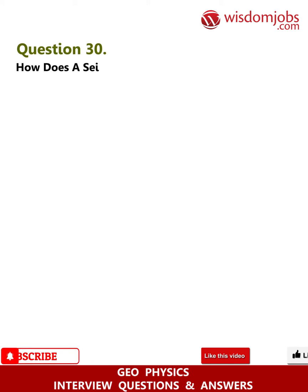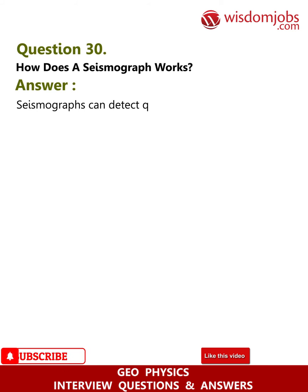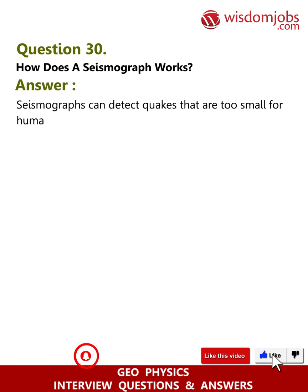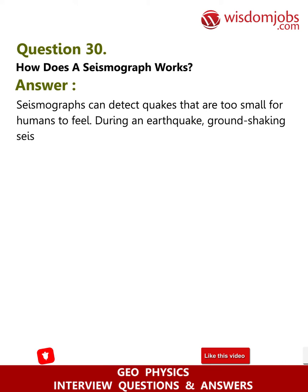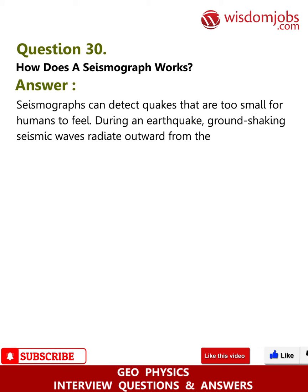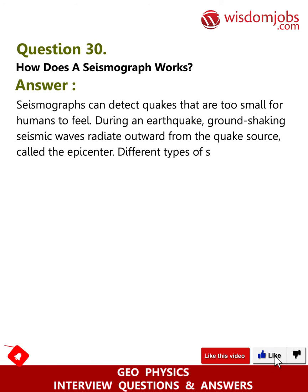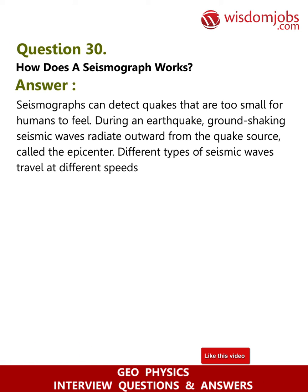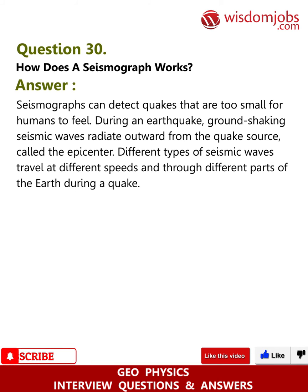Question 30: How does a seismograph work? Answer: Seismographs can detect quakes that are too small for humans to feel. During an earthquake, ground shaking seismic waves radiate outward from the quake source, called the epicenter. Different types of seismic waves travel at different speeds and through different parts of the earth during a quake.